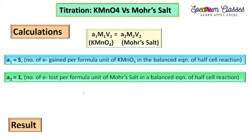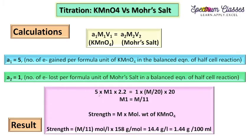Now we are going to calculate. So 5 times M1, we have to check, times 2.2 ml (the volume consumed for KMnO4) equals a2 which is 1 times M by 20 times 20 ml. From this we get M1 equals M by 11.